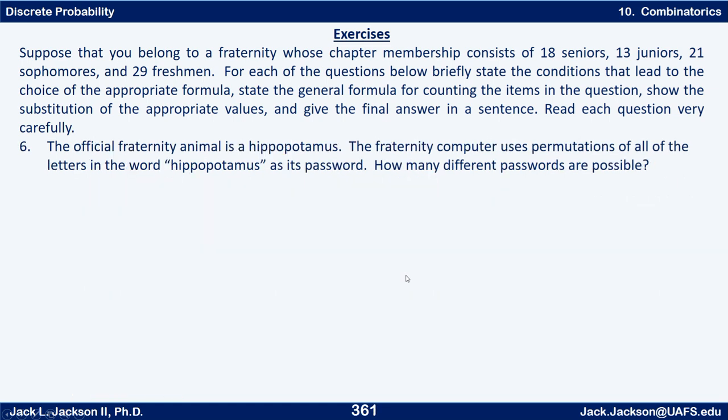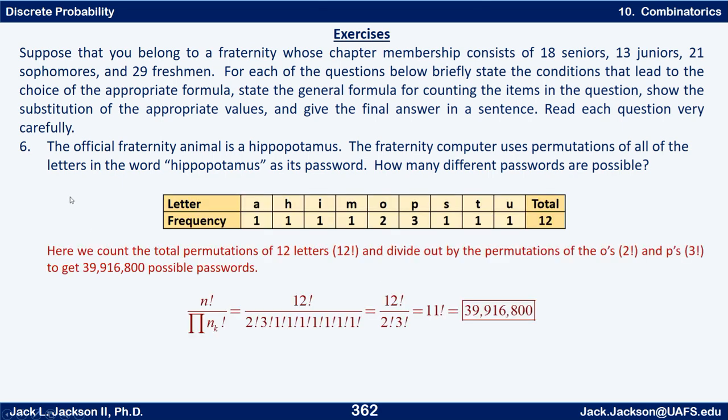Okay, here's another question for you. The official fraternity animal is a hippopotamus. Fraternity computer uses permutation of all the letters in the word hippopotamus as its password. How many different passwords are possible? When you get this worked out, come back. Press pause now. Well, let's see. There's one A, one H, one I, one M, one U, one T, one S, but there are two O's and three P's. So for a total of 12 letters, it's 12 factorial over 2 factorial, 3 factorial, and the 1 factorials you can forget. And that works out to be, well, let's see, 3 factorial is actually 6, 2 factorial is just 2, 2 times 6 is 12, so the 12 actually cancels. That's 11 factorial, that works out to be 39,916,800 possibilities there.